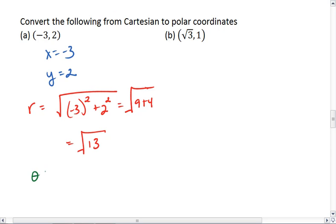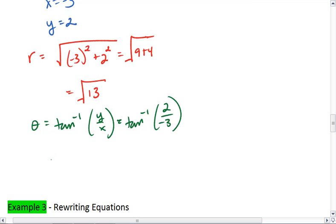Now, I want to find theta. Theta is going to be tan inverse of y over x, which is tan inverse of 2 over negative 3. Please remember that negative. I plug this into my calculator and I get negative 0.588.